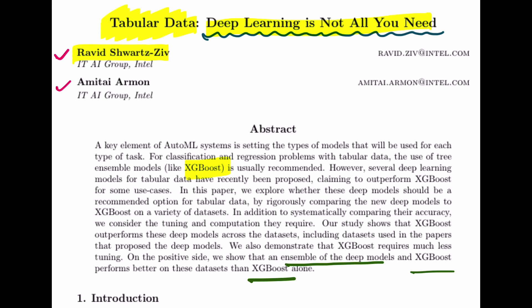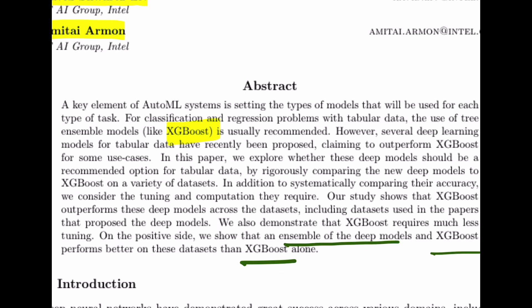This paper is published by Ravid Schwartz-Ziv and Amitai Armon. Let's get into the paper abstract and understand what this is. One of the key elements of an AutoML system is that you're going to have different types of models that will perform a particular task.